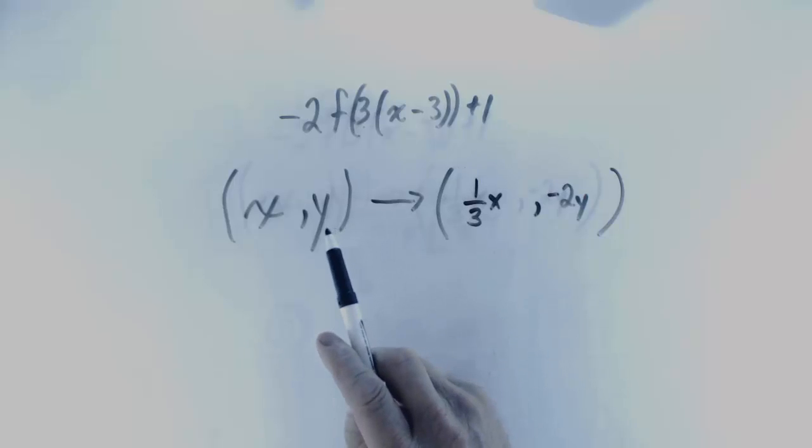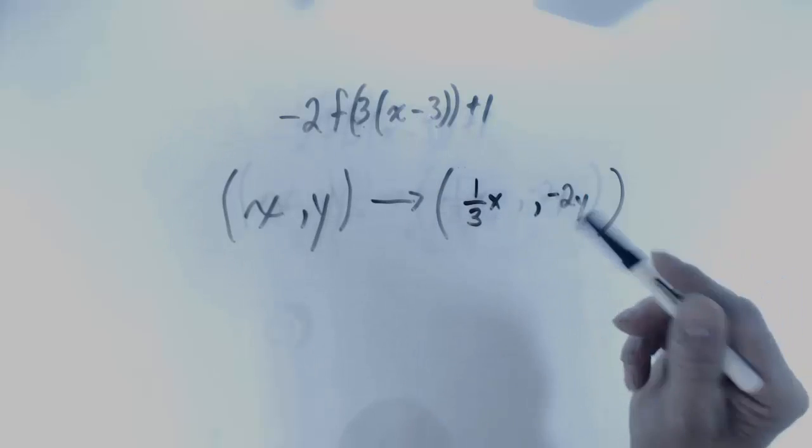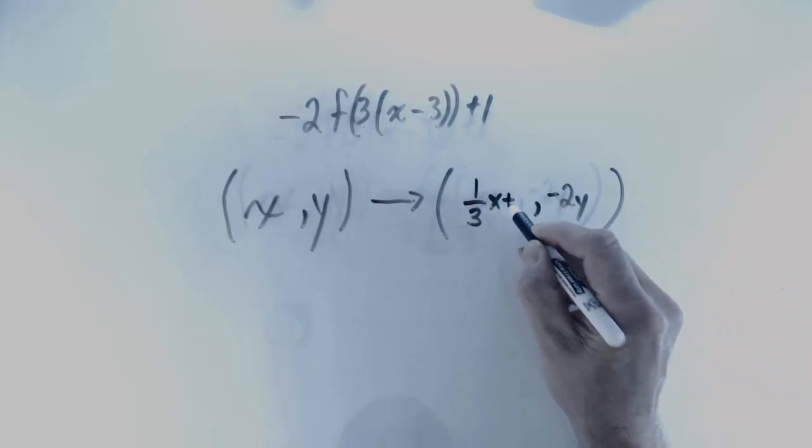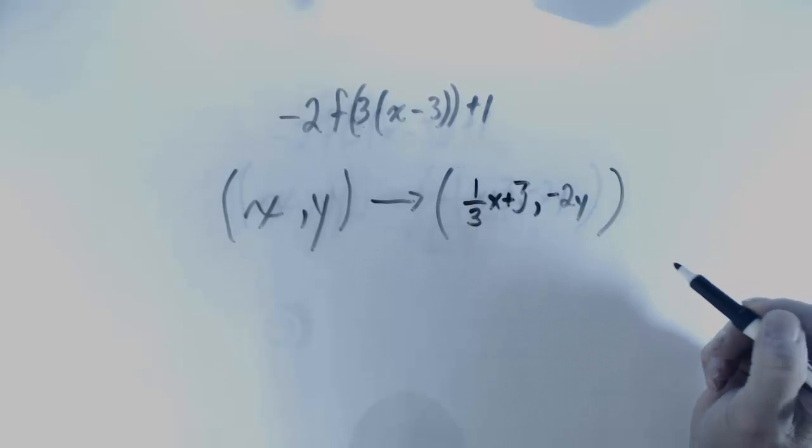Now I am ready to deal with my translations. I can see I am subtracting a 3 from the x. That means that any point is going to shift to the right or increase in value by 3 when it is mapped.